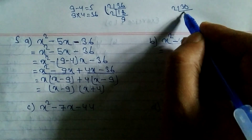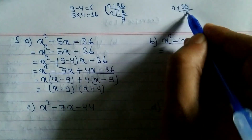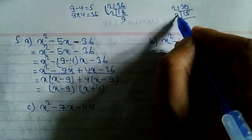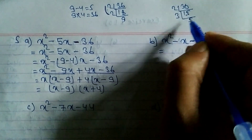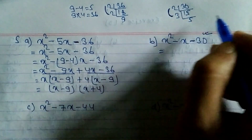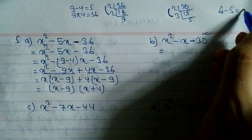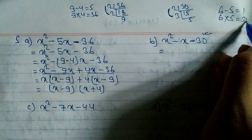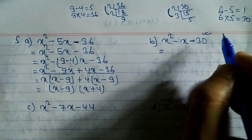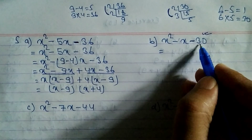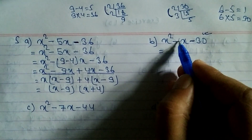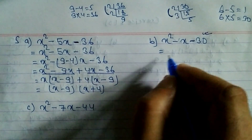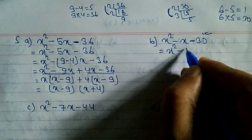Trying pairs: 2 and 5 give 15 when subtracted — not 1. Try 6 and 5: 6 minus 5 equals 1, and 6 into 5 equals 30. So the factors are 6 and 5. We write x² - (6 - 5)x - 30.